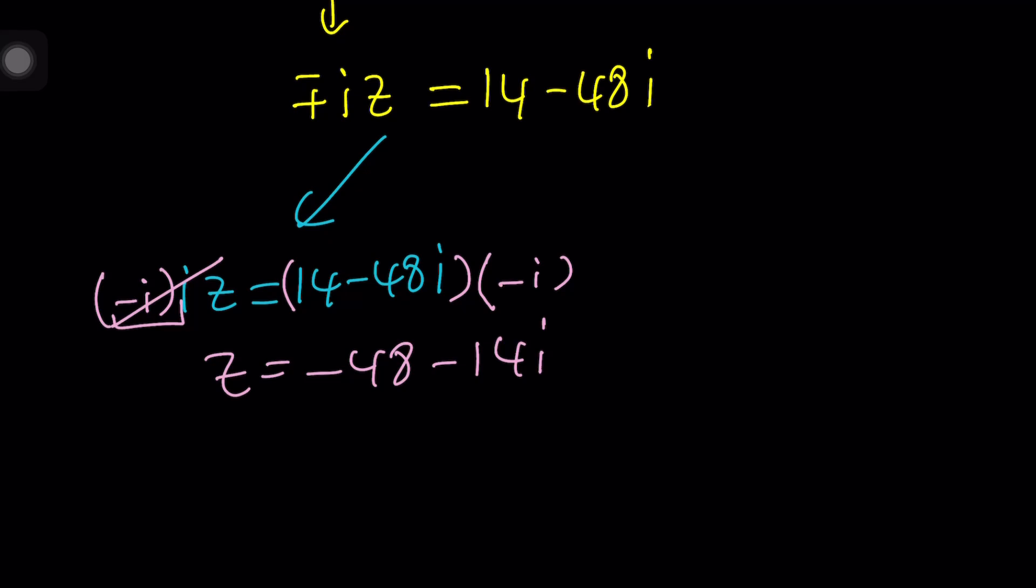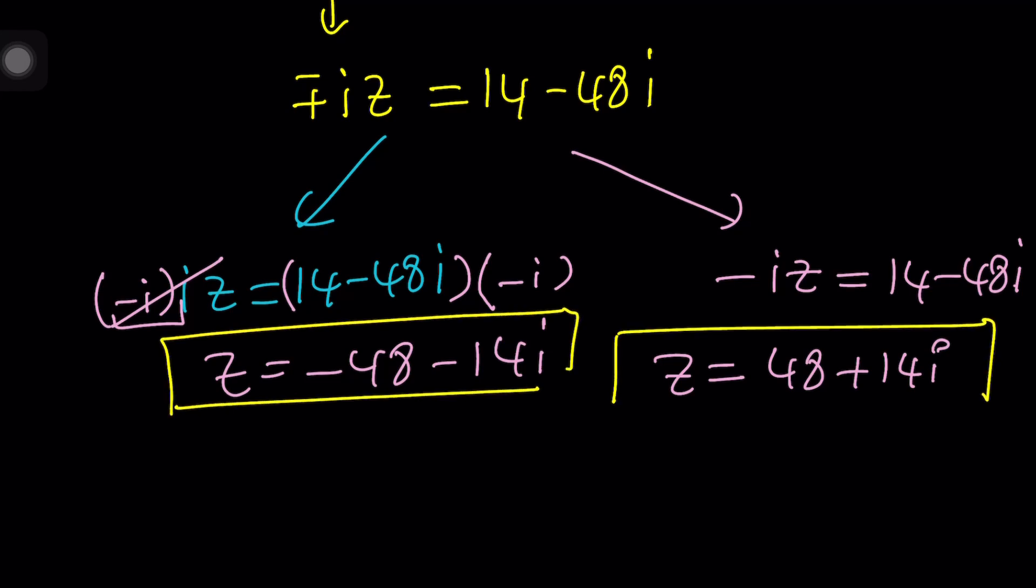Now remember, the other solution is going to be coming from negative iz equals this. And of course, you're going to multiply both sides by i, and that's going to give you the opposite of this number. That kind of makes sense, right? Because if z is a solution, negative z should also be a solution. If you multiply by i, you're going to get negative 48i squared, which is 48, plus 14i. Again, they are opposites, right? z sub 1 and z sub 2, and that kind of makes sense, doesn't it?